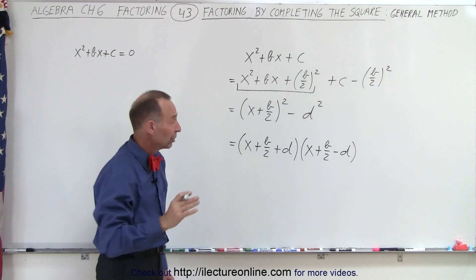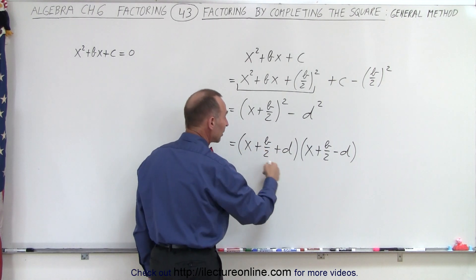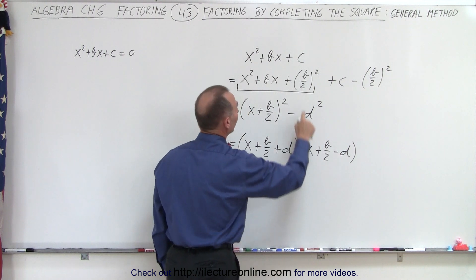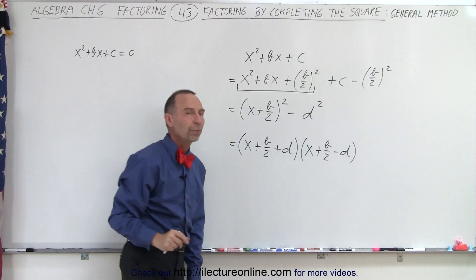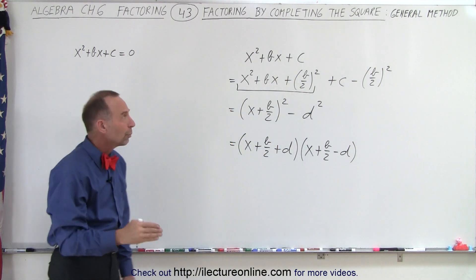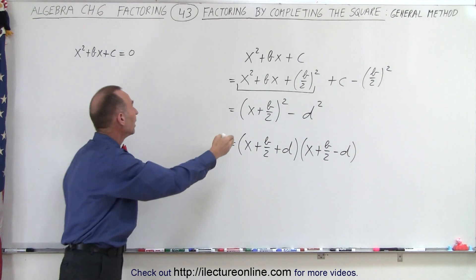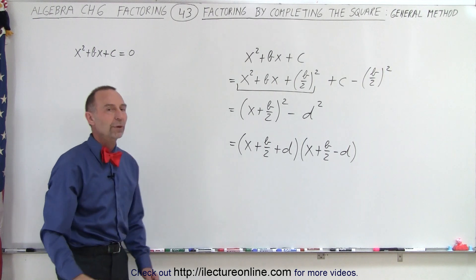Now, if this were actually numbers, we would then take the b/2 + d and the b/2 - d and simplify that into a single number. And that would then be the factored form of our original problem. So that's the technique we're going to use called completion of the square technique to actually factor instead of solving for the equivalent quadratic equation.